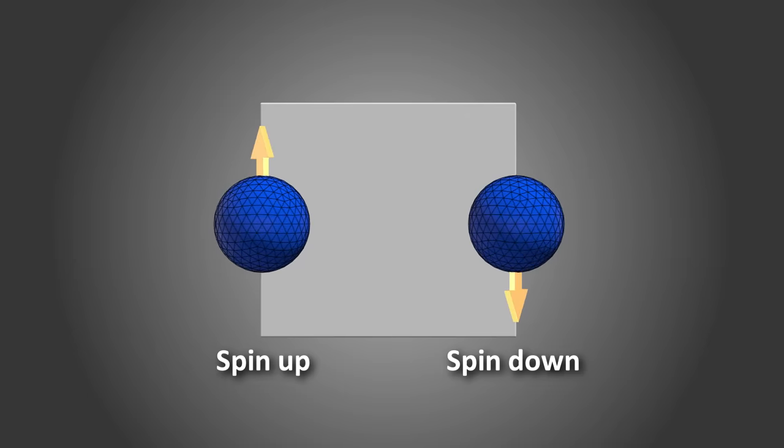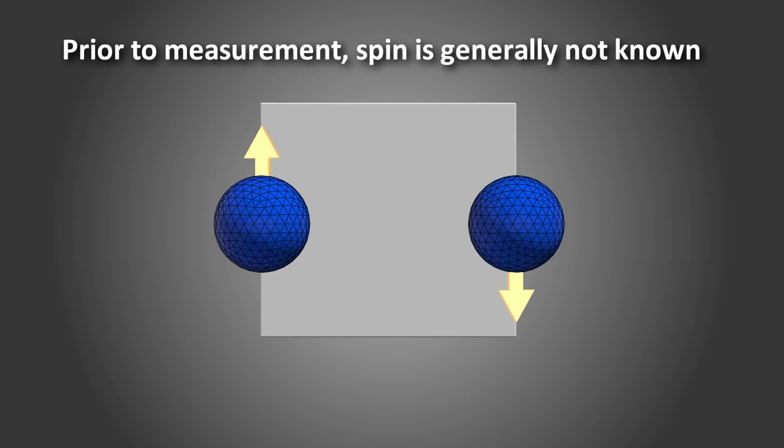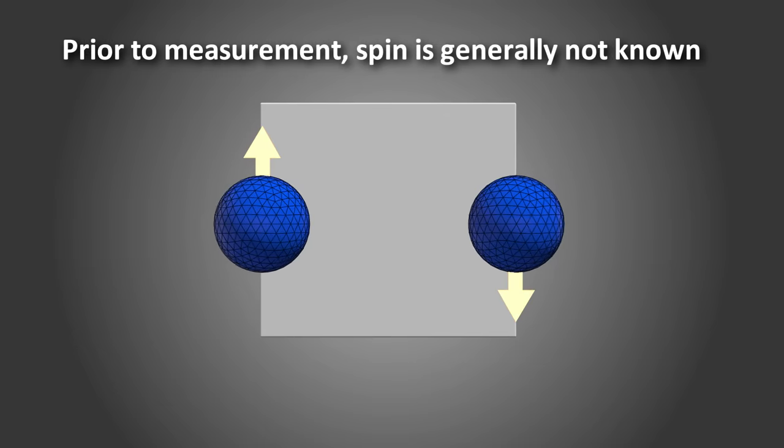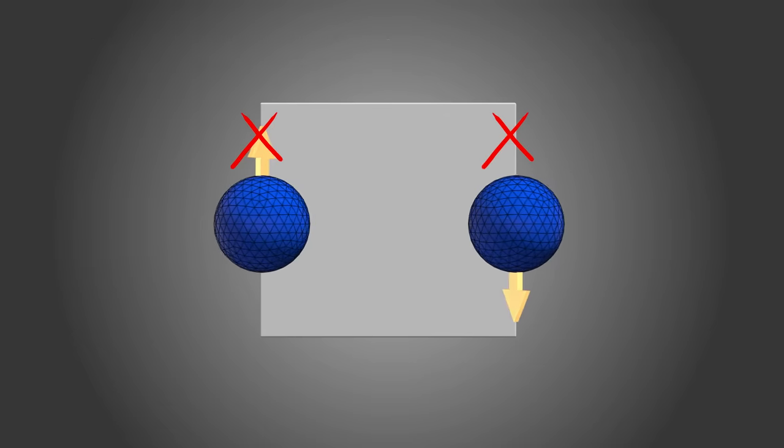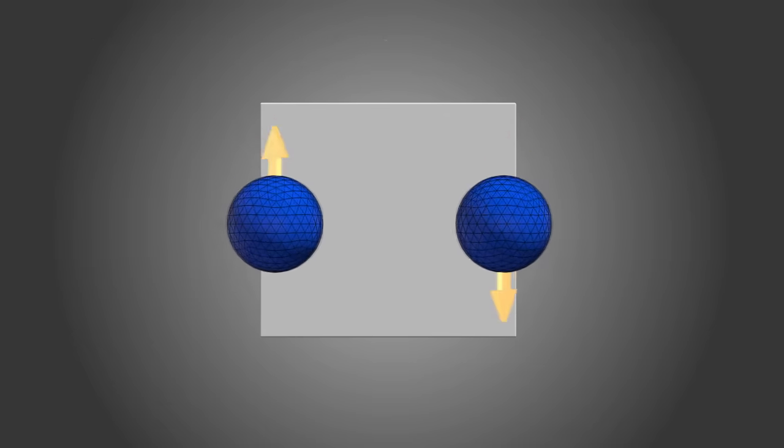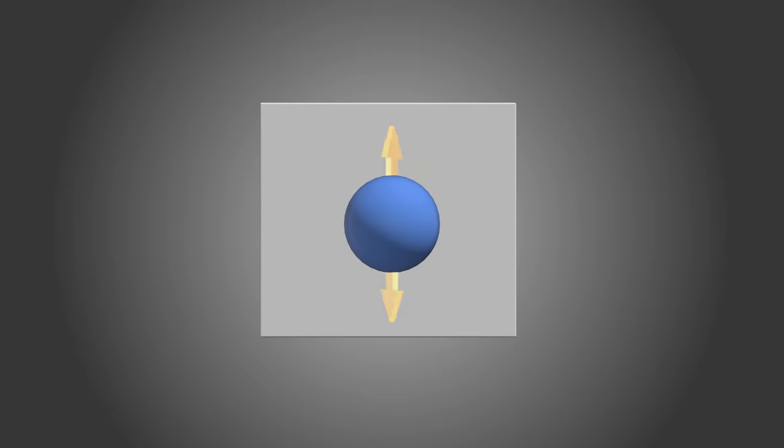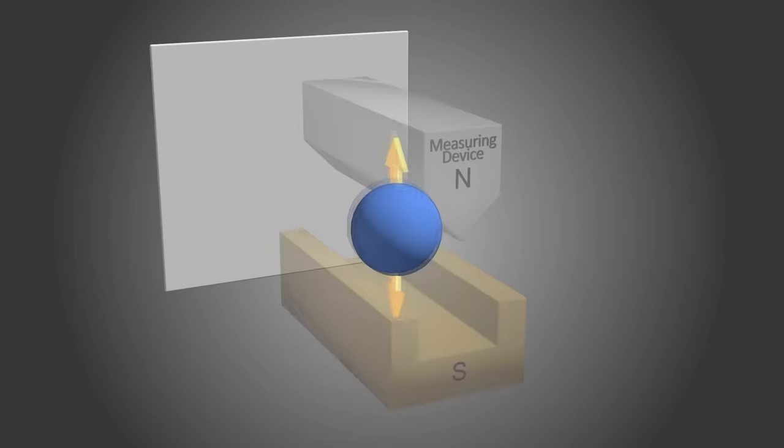Which physicists call spin up or spin down. You might think that here too, the particle is always definitely one or the other. That we'll just find out which it is by looking, by making a measurement. But that's not the case.